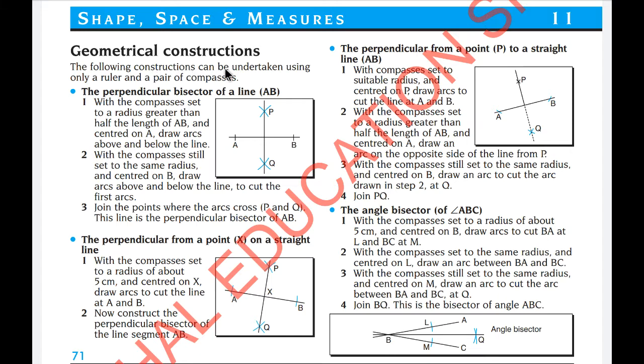The following constructions can be undertaken using only a ruler and pair of compasses. The perpendicular bisector of a line: with the compasses set to a radius greater than half of the length of AB and centered on A, draw arcs above and below the line. With the compasses still set to the same radius and centered on B, draw arcs above and below the line to cut the first arcs. Join the points where the arcs cross P and Q. This line is perpendicular bisector of AB.